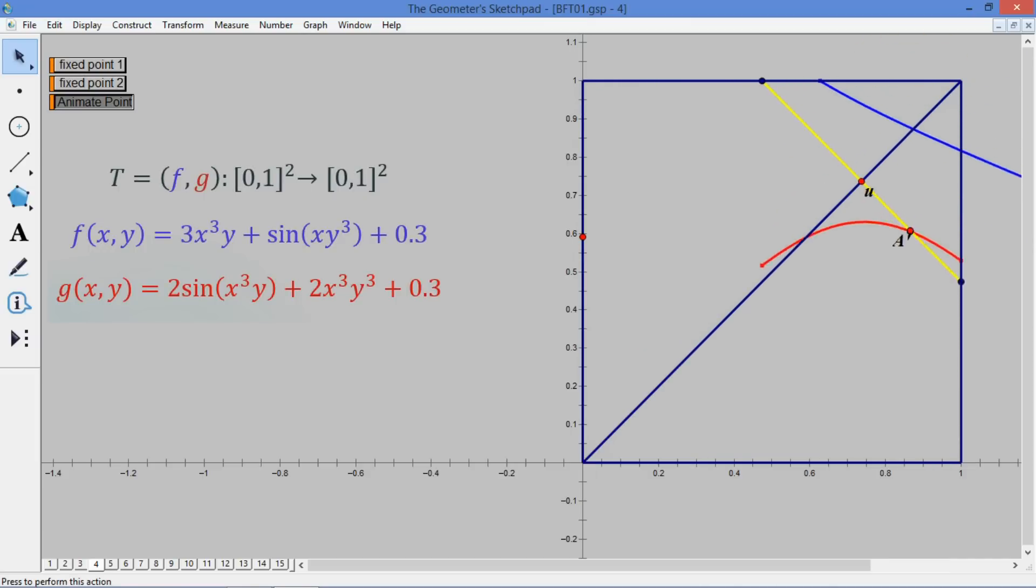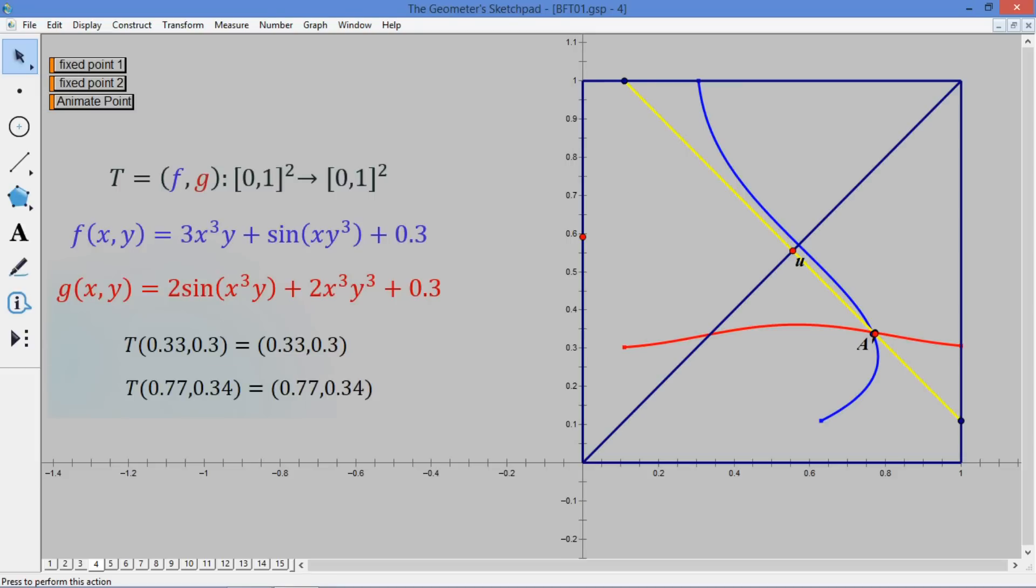We go to the first fixed point, which is at point A. And then we now go to the second fixed point, which is at point A prime.